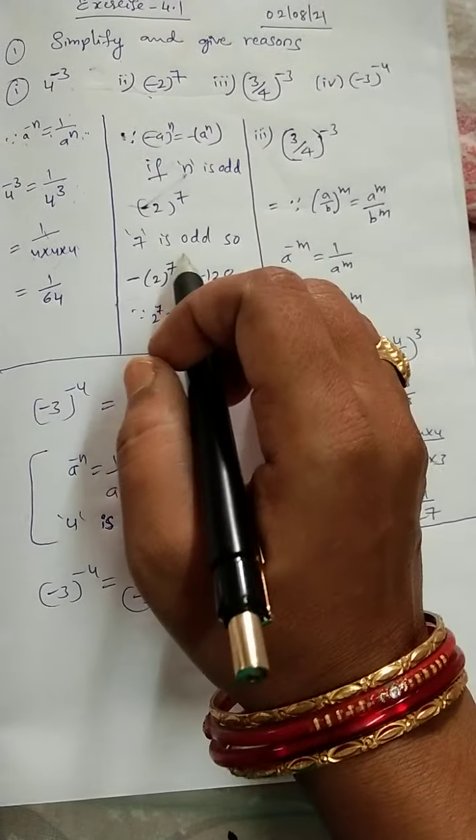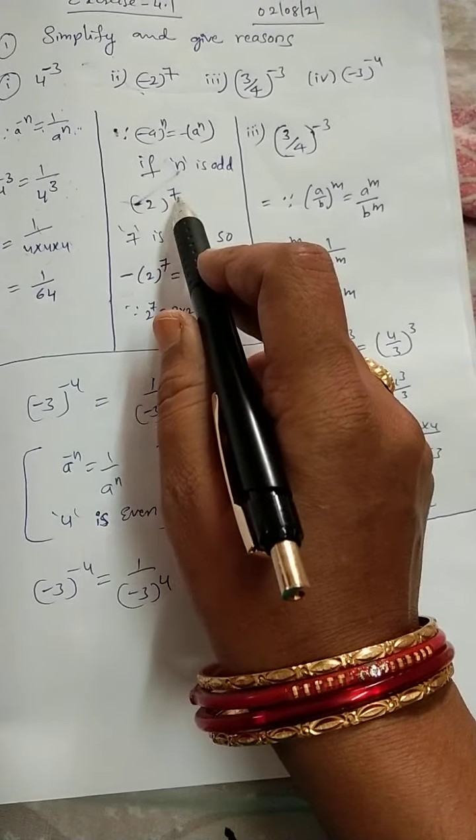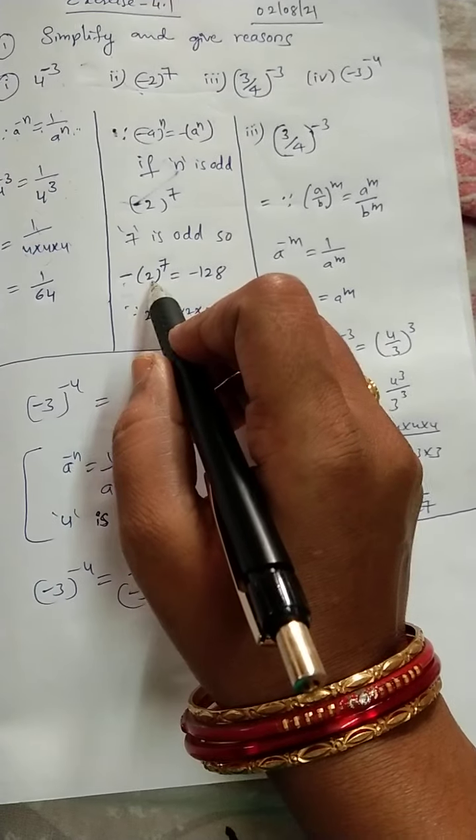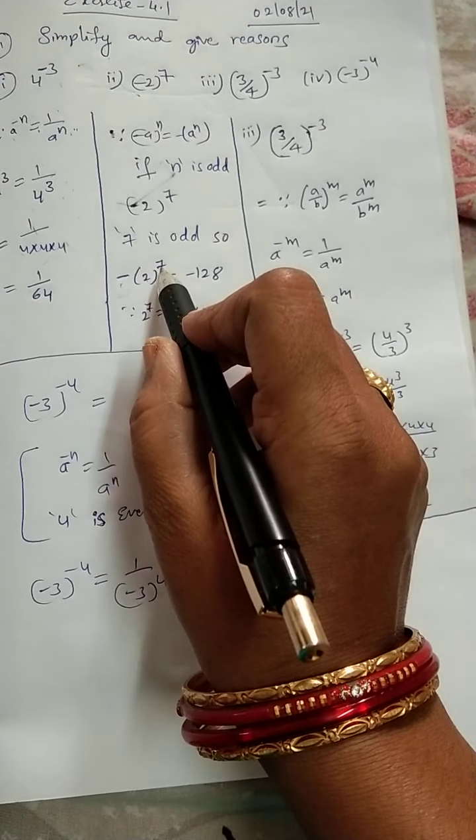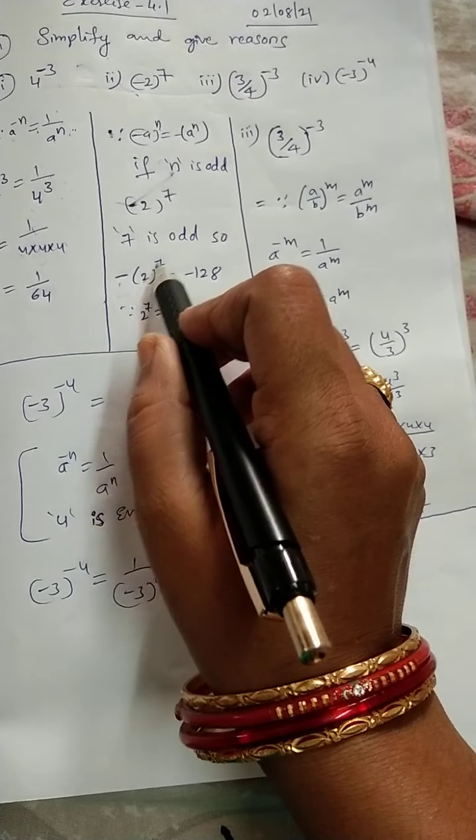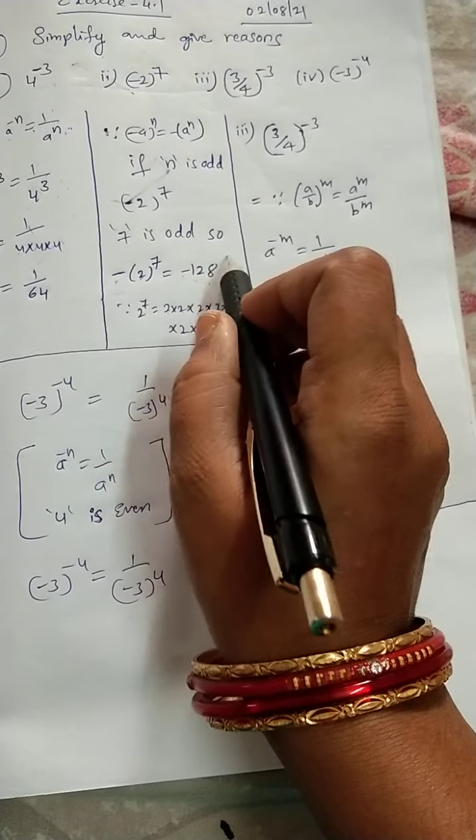Okay, here also 7 is odd number. So, here minus 2 whole power 7 will become minus 2 into 2 power 7. 2 power 7 value is 128. So, minus 128.